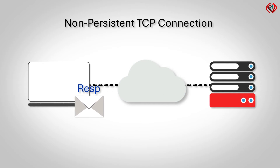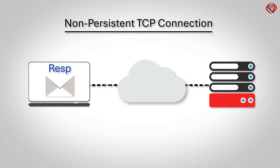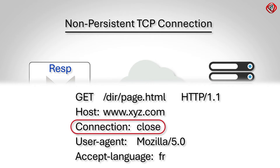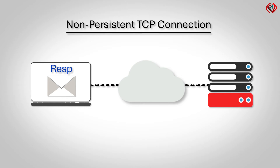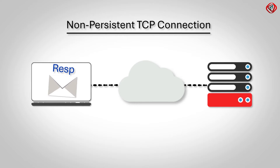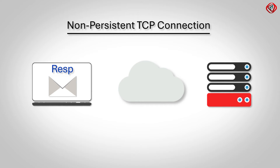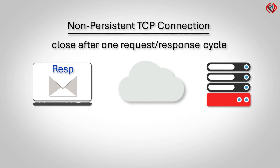In case of non-persistent TCP connections, the web browser tells the web server to close the TCP connection after sending the response using the header 'connection: close'. So after sending the response, the web server tells TCP to close the TCP connection. But since TCP provides a reliable data transfer service, TCP does not terminate the connection until the web browser has received the HTTP response message correctly. When the web browser receives the HTTP response message, the TCP connection is closed. Hence, in a non-persistent connection, the TCP connection is closed after one request-response cycle is completed.